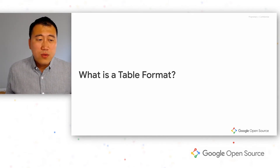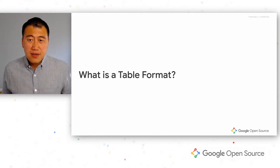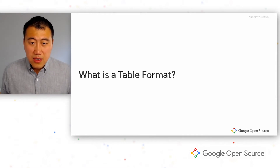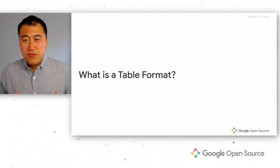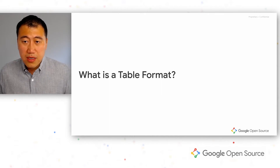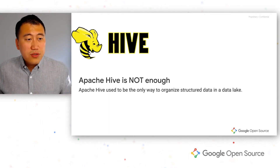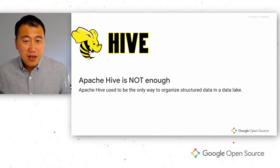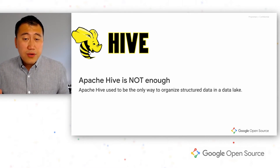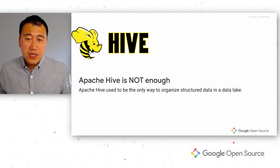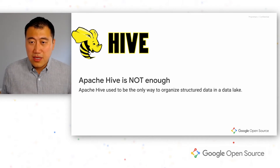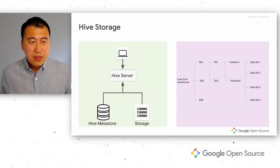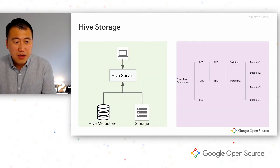So first of all, what is a table format? A table format is a way to organize data files into a structured table. The most typical file format you can think of is Apache Hive. It used to be the only way to organize data into a data lake or an enterprise data warehouse on top of Hadoop. But it has some inefficiencies, so we're going to talk about that first.